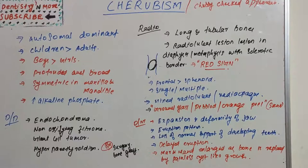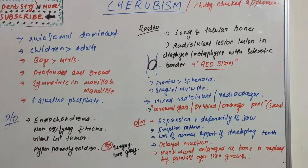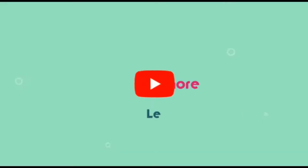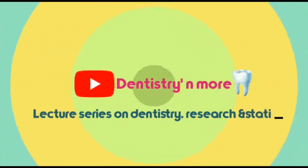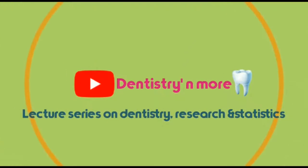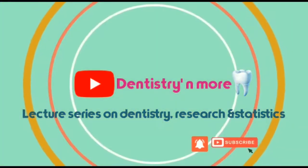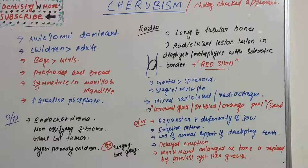We have previously learned fibrous dysplasia, osteogenesis imperfecta, Paget's disease, and cleidocranial dysplasia or Down syndrome — all of these involve the facial bones. Similarly, Cherubism is also a non-inflammatory condition which affects the jaw. Today we will learn about its features, differential diagnosis, and oral manifestations.